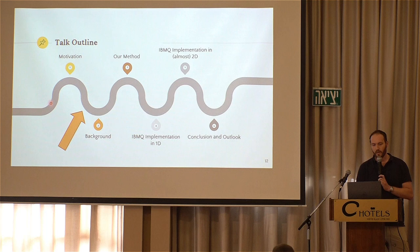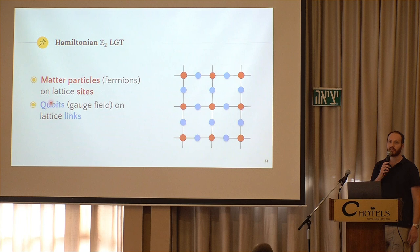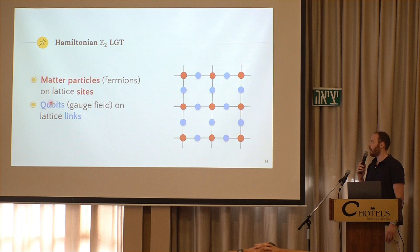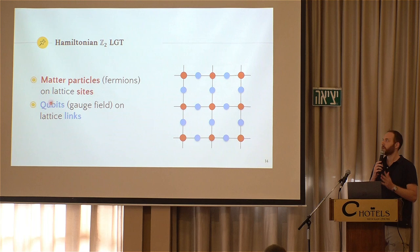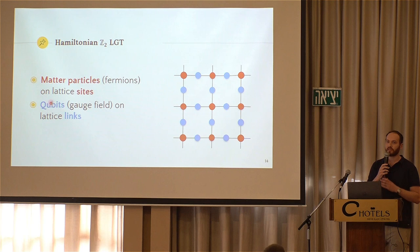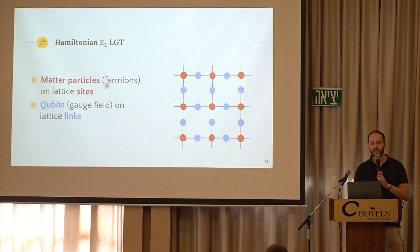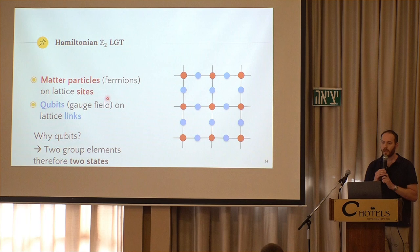So the model that we are trying to quantum simulate is called Hamiltonian Z2 lattice gauge theory. Hamiltonian means that we only discretize space and not time, and the Z2 part is the type of symmetry that we assume. Our method works for any symmetry group, but we chose Z2 for demonstration purposes because it's the simplest gauge group possible. It only has two elements, either you flip or you don't flip. And it already features all the problems that I showed you in the previous slide. So that's the reason why we focus on that for the demonstration, but the method works for any group. So in this particular lattice gauge theory, we have matter particles on the sides, and we have qubits on the links. Why qubits? Because there are two group elements, so you need a system with two levels on each link.